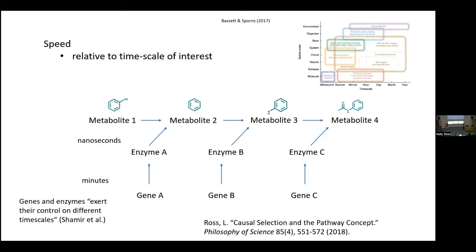Here's a diagram from Bassett and Sporns that helps capture this — showing different timescales of interest in the context of neuroscience. Part of what I've suggested is that we often see the timescale of interest in the effect scientists are focused on — the explanatory target. In other cases, you're interested in a candidate cause and start there first. In each case, there's often a timescale of interest from the beginning.